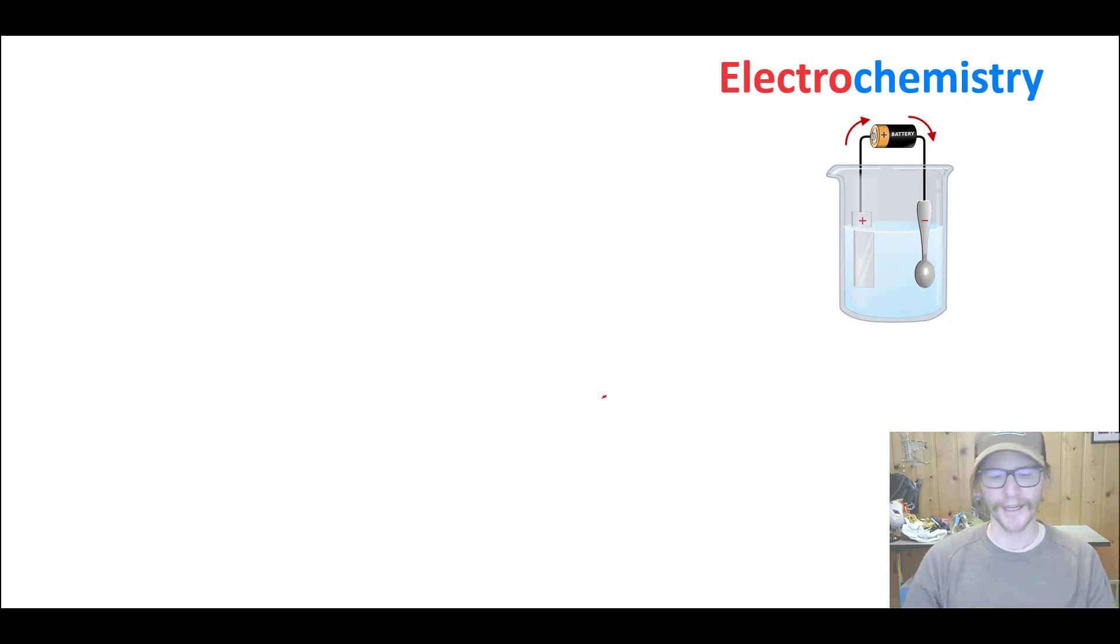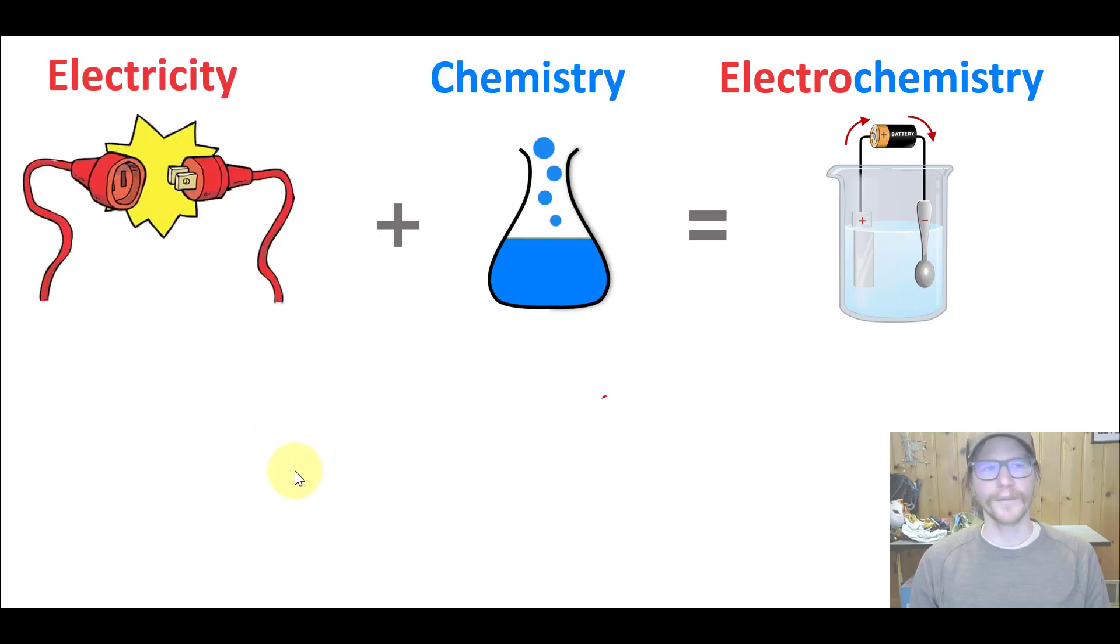And so electrochemistry, as you know, as somebody who's been exposed to electrochemistry at least once in your Gen Chem 2 course, in Chem 108, you know that electrochemistry really is the combination of electricity and chemistry. That's the portmanteau electrochemistry, that's what it means. But it also fundamentally means that.